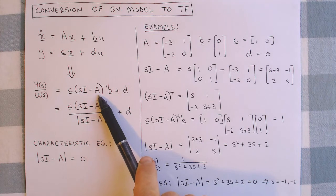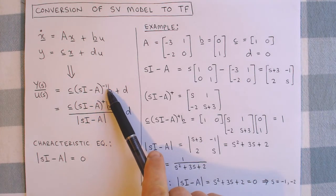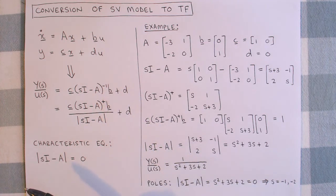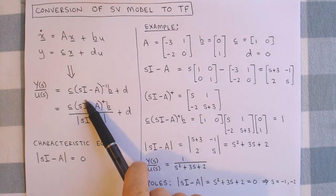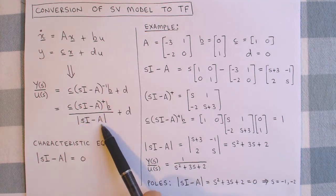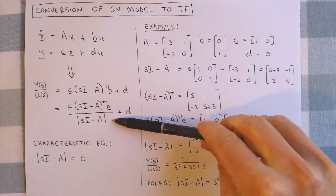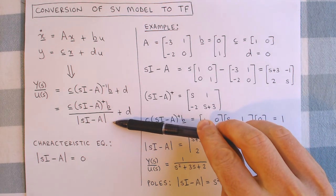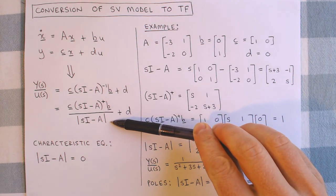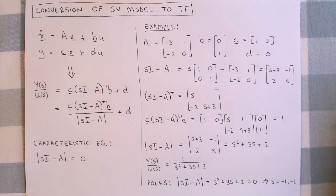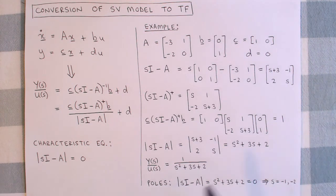SI minus A is a matrix and should be inverted. This inverted matrix can be written as the adjoint matrix divided by the determinant of SI minus A. The denominator of the transfer function is therefore the determinant of SI minus A. By setting the denominator of the transfer function to zero, we can calculate the poles of the system. This is also the characteristic equation.